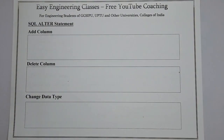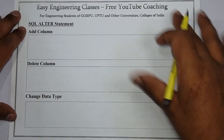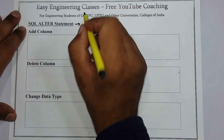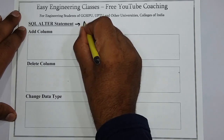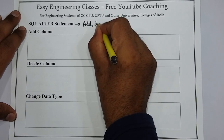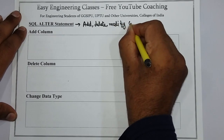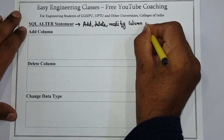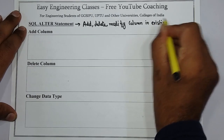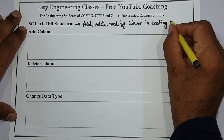Hello students, today we will see about the SQL ALTER statement. SQL ALTER statement is used basically for adding, deleting, or modifying columns in an existing table. So you can add a column, delete a column, and also modify a column in an existing table. One by one we will see examples of each: adding, deleting, and changing the data type of a column.